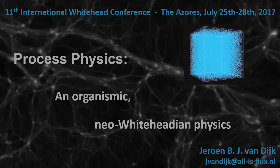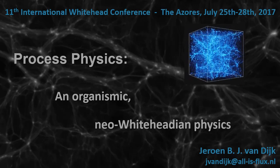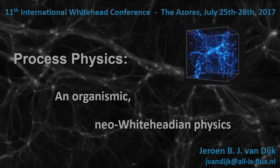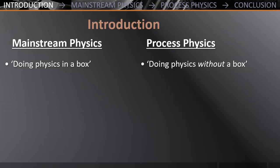Our current physics is especially non-ecological, since it likes to split up its universe of discourse into target system, subject system, and their external environment. Because of this tendency to dissect nature into smaller bits and pieces, mainstream physics can be characterized as doing physics in a box, as Lee Smolin likes to call it. It separates natural systems from the rest of the universe, including observers. In contrast, process physics may be called doing physics without a box, in that it models nature as an ecological whole, without any a priori separation between subject and target side, and without excluding any environmental influences.